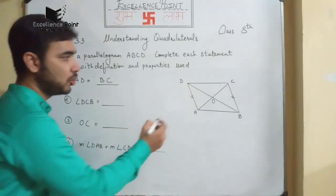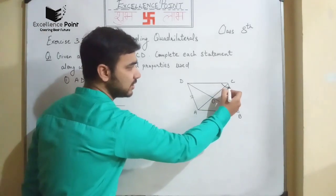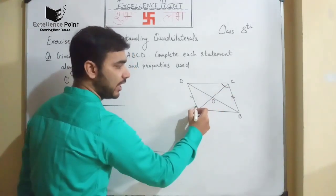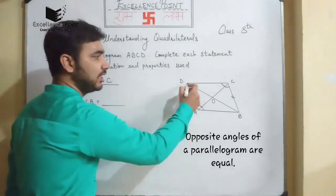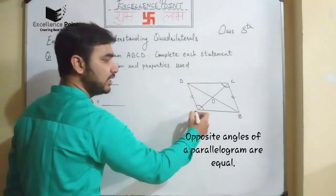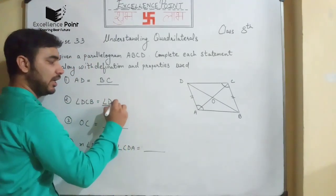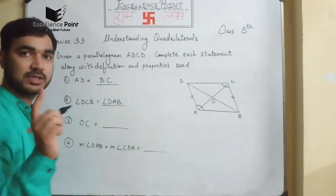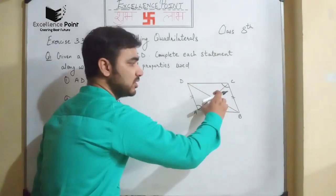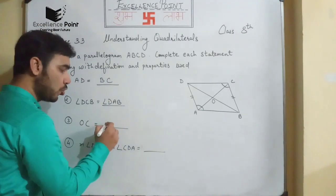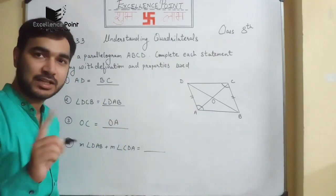Second: angle DCB. So angle DCB — it is talking about this angle — and the opposite angles of a parallelogram are equal, so we can say that angle DCB is equal to angle DAB. So angle DAB will be the answer. Third: OC is equal to — the diagonals of a parallelogram bisect each other.